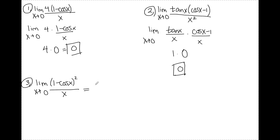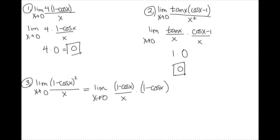For number three, I split this as 1 minus cosine x over x times 1 minus cosine x. The limit as x approaches 0 of 1 minus cosine x over x is 0, and 0 times anything is 0. So the answer for number three is 0. That's it for evaluating trig limits using formulas. If you have any questions, feel free to leave them in the comments below. Have a great day.